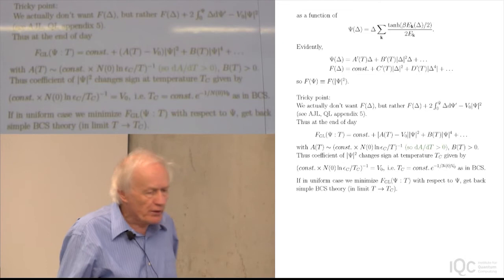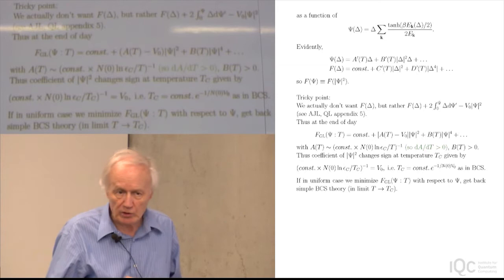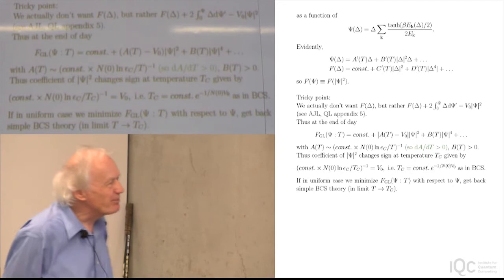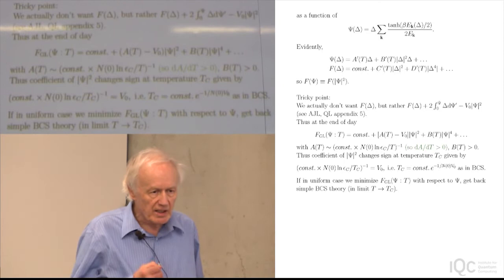So far so good — I've at least sketched this. Incidentally all of this is done in gory detail in one of the appendices of my book, if anyone wants to look it up. I've tried to get the coefficients right. That's the general scheme of getting the bulk terms. Now, what about the bending terms? Can you derive the bending terms in Ginzburg-Landau from BCS theory?